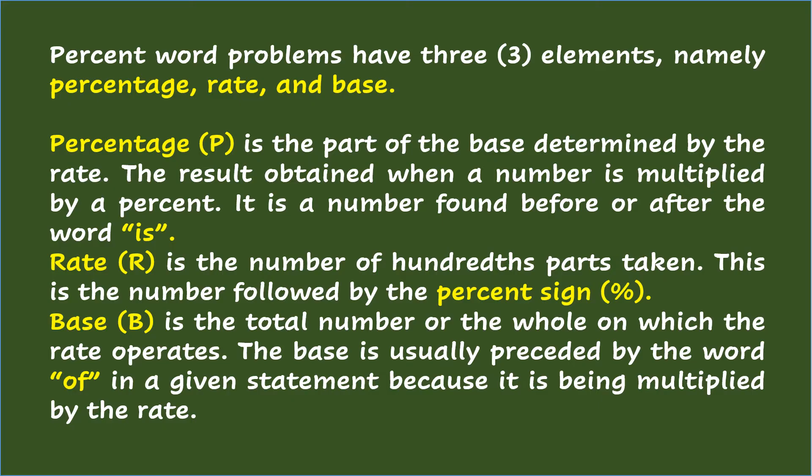Percentage is the part of the base determined by the rate — the result obtained when a number is multiplied by a percent. It is a number found before or after the word 'is.' Rate is the number of hundredths taken; this is the number followed by the percent sign. Base is the total number or the whole on which the rate operates. The base is usually preceded by the word 'of' in a given statement because it is being multiplied by the rate.